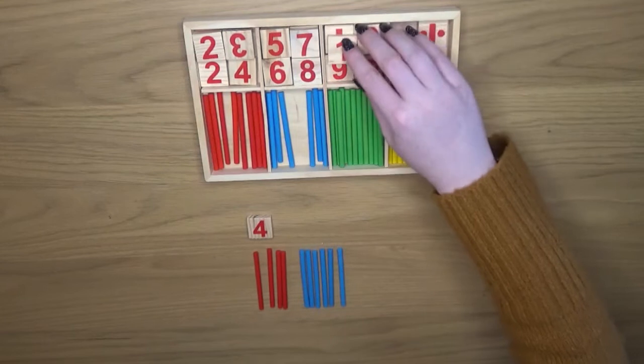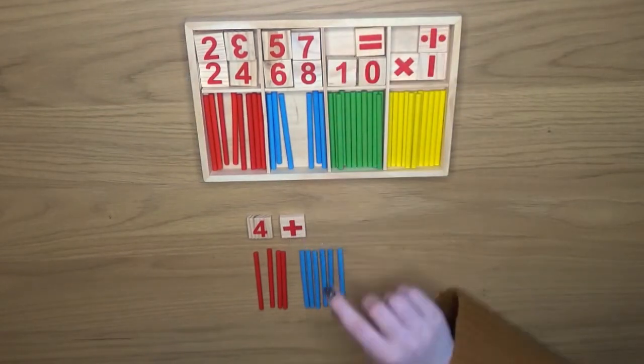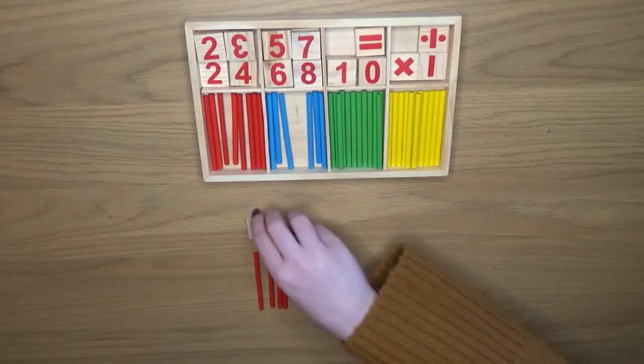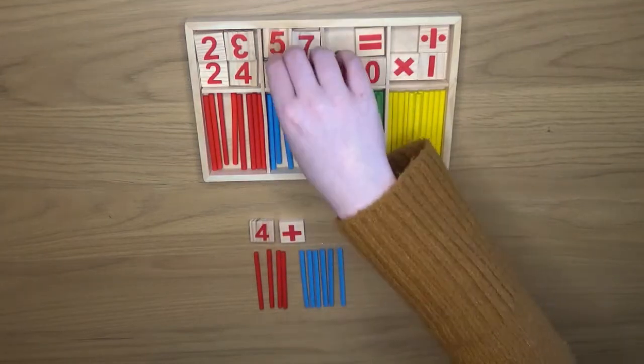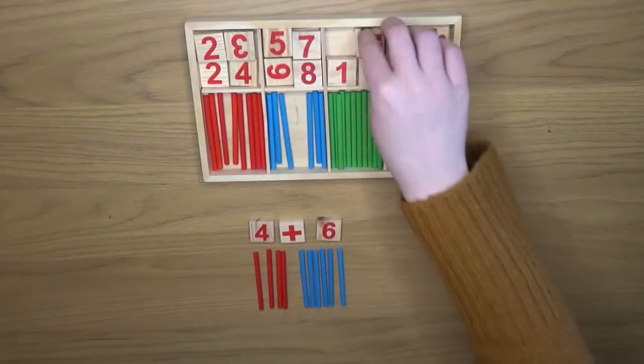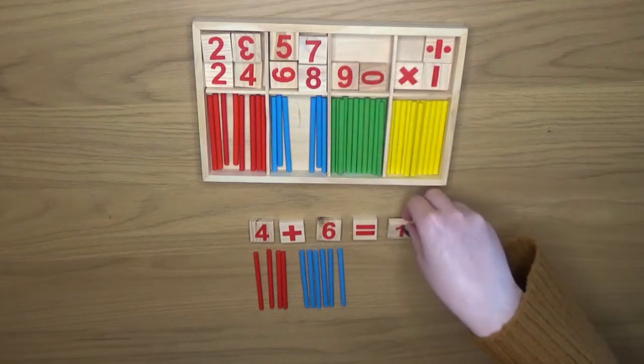Once children can use the resources to make number bonds to ten with quantity, they can then start using the numerals to represent this in a number sentence. So once children start to understand more about quantity and how different quantities work together to make ten, you can extend their learning by bringing in numerals and writing or creating number bond sentences.